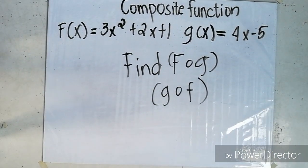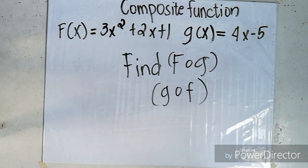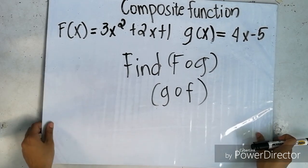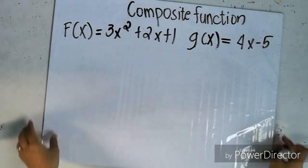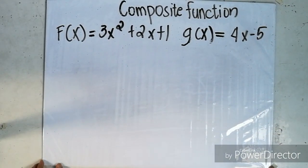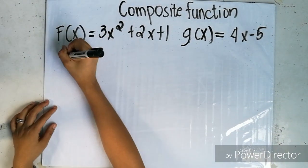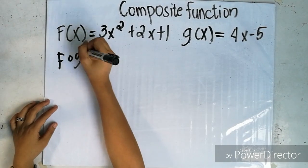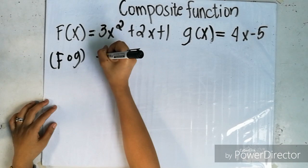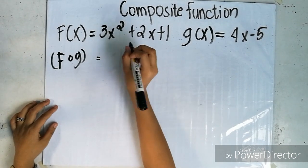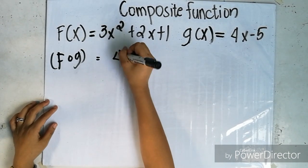Another example: f(x) = 3x squared plus 2x plus 1, and g(x) = 4x minus 5. Find f composite of g and g composite of f. In this example, for f composite of g, f(x) will be our equation and g(x) will be our value of x.